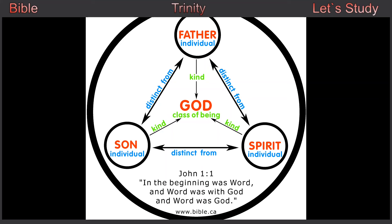In Genesis chapter 2, it says God made a mist to water the garden or the earth. Now we have rain droplets — we had one solid foundation of water, and you have the Son that came forth from the Father, and he and the Father are one, playing different roles. Then we see the representation of the Comforter, the Holy Spirit.